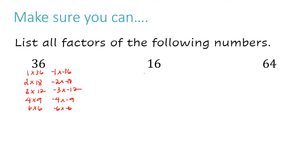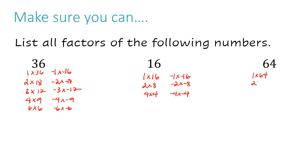Now let's do the same for 16. 1 times 16 gives you 16, 2 times 8 gives you 16, 4 times 4 gives you 16. Because 4 is a double, that means I've listed all of the factors. I can also list the negative version of all of these factors, since all of these would total 16. Now I'm going to do that same step for 64: 1 times 64, 2 times 32 — and so on for all positive and negative factors of 64.